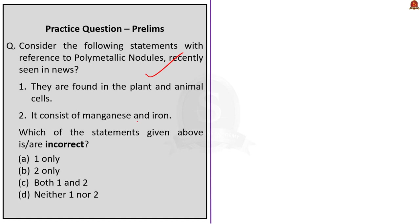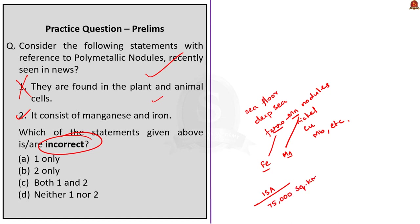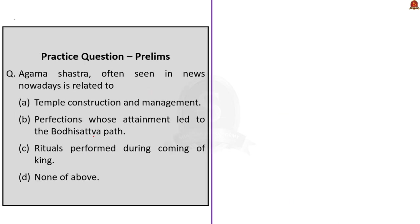Statement 1 says they are found in plant and animal cells — this is incorrect. They are actually found in abundance carpeting the seafloor of the world's oceans in the deep sea. They are known as manganese nodules or ferromanganese nodules containing manganese, iron, nickel, copper, cobalt, lead, molybdenum, cadmium, vanadium and titanium. Statement 2 is correct because it states they consist of manganese and iron. Remember, India has a polymetallic nodules program oriented towards exploration and development of technologies for extraction from the central Indian Ocean Basin, with an allocated area of 75,000 square kilometers under the contract with the International Seabed Authority. Since the question asks for the incorrect statement, the correct answer is option A — one only.